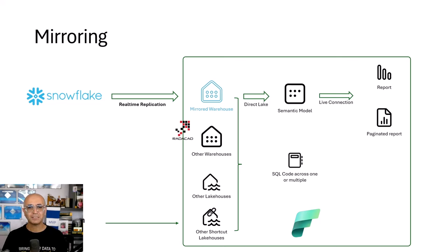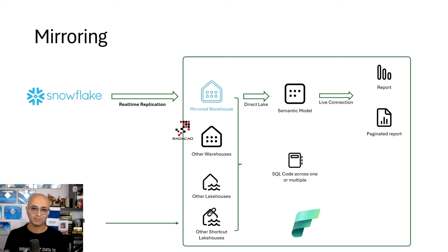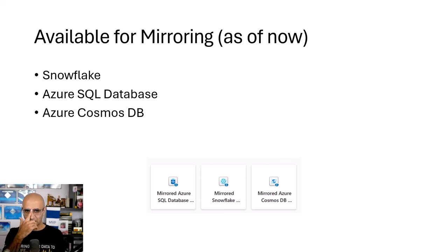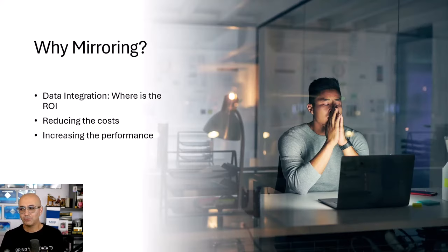Basically it's a copy of that data, but you don't need to worry about the integration or keeping it synchronized — it saves you a lot of time and money. Mirroring is currently available for three sources: Azure Cosmos DB, Azure SQL Database, and Snowflake. Other sources are coming in the future, but at the moment these are the three available.